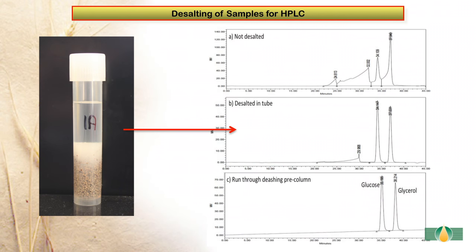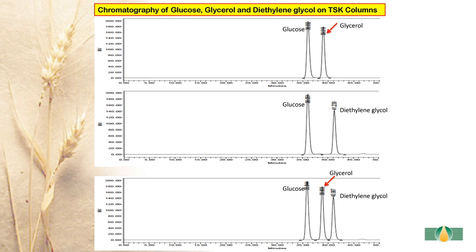In this slide, we also see the HPLC patterns on TSK columns of: A, a non-desalted sample; B, the same sample desalted in a tube with cation and anion exchange resins; and C, sample B applied to the HPLC column through the desalting pre-column. In this work, we have generally recommended the use of glycerol as the internal standard, but diethylene glycol is an alternative and equally useful standard. The chromatography patterns of glucose, glycerol, and diethylene glycol are shown in this slide.